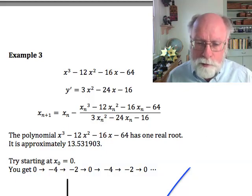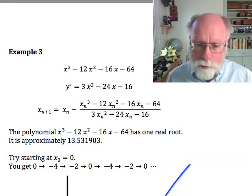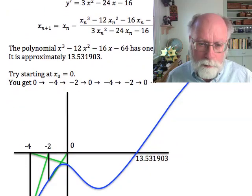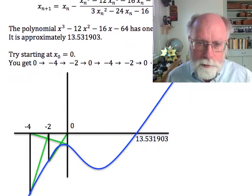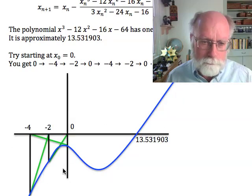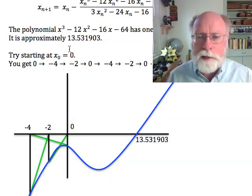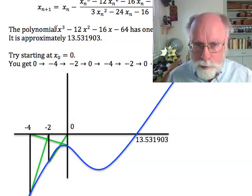This is a cubic which has only one real root and that real root is approximately at 13.531903. If you start your Newton's method close to 13 you will get a very nice convergence. But there's something else that happens with this particular polynomial.